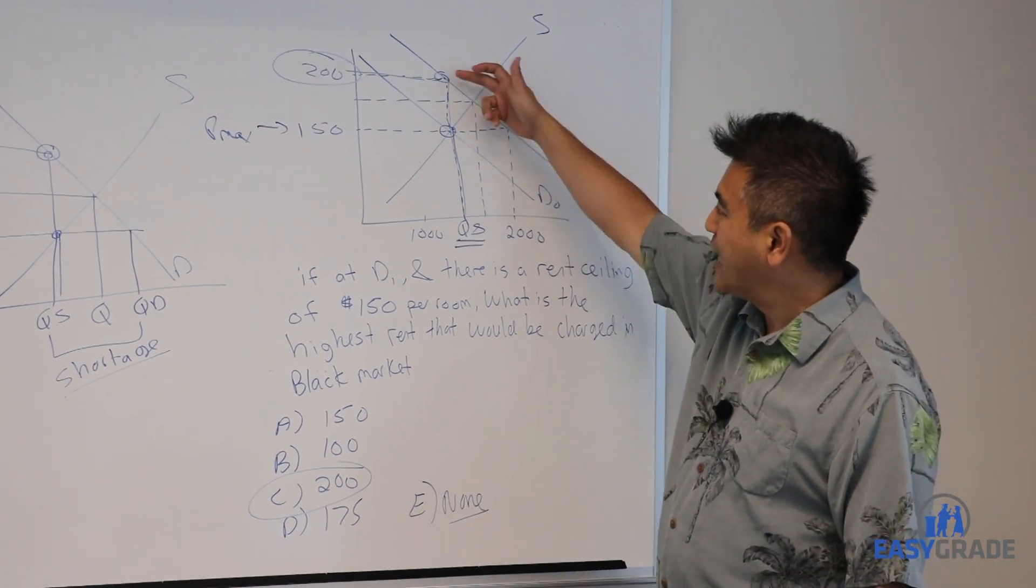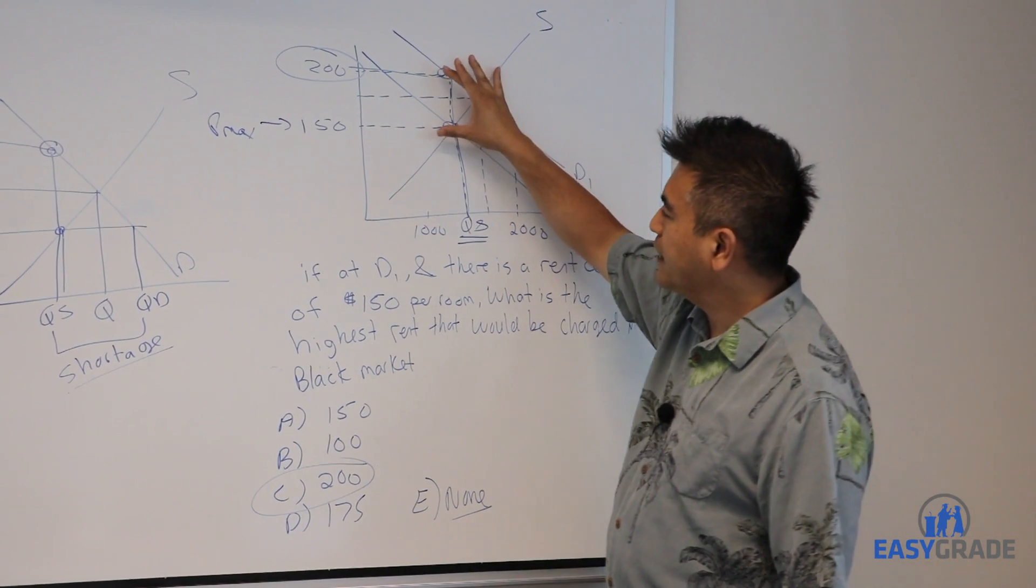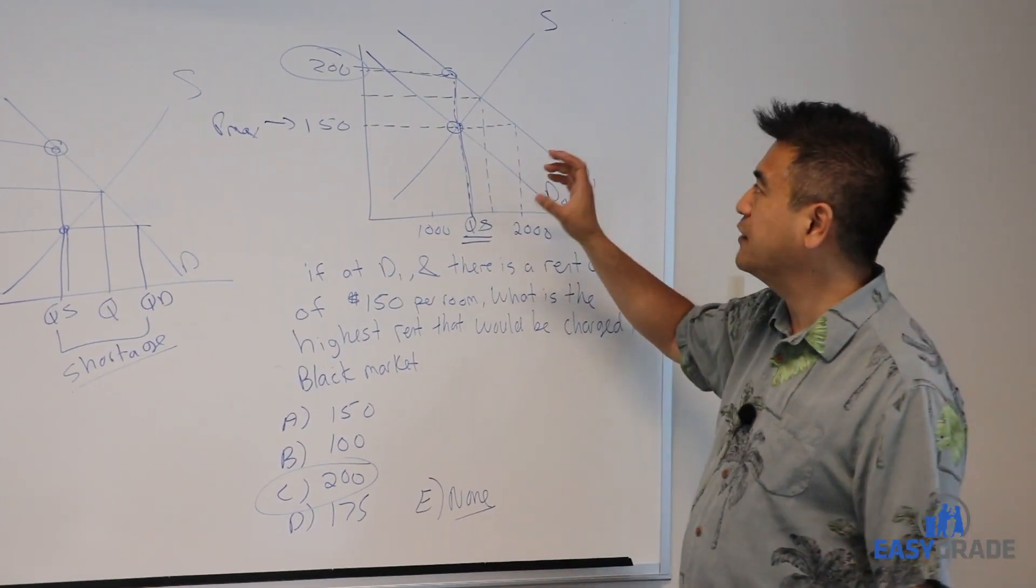As you can see, the black market price is higher than the ceiling price. That means that the firms could actually make a profit if they were willing to do something illegal.